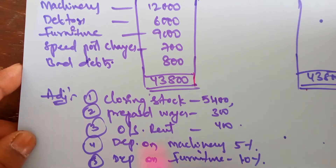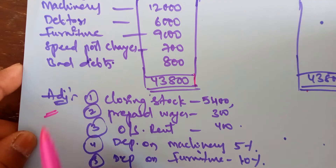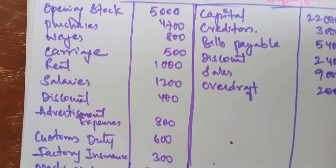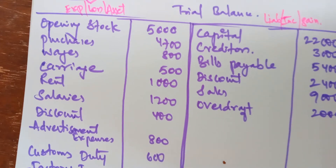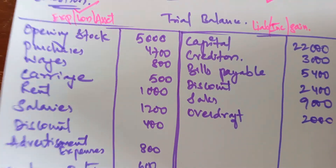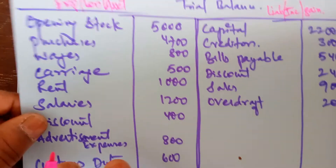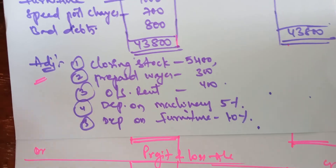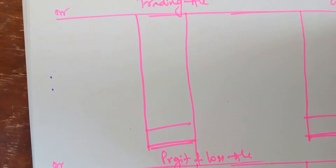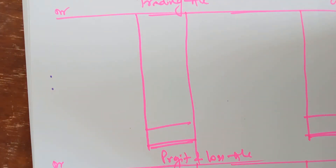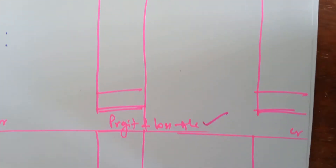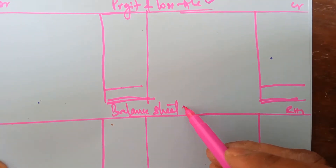The trial balance ends here and a couple of adjustments are also given. I am showing you the question and then I will do the answer. The question shows debit side items, credit side items, and at the end a couple of adjustments. By seeing this we have to prepare the final account which comprises of: first, trading account; second, profit and loss account; and third, balance sheet.